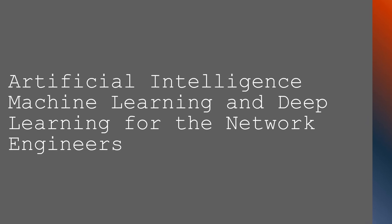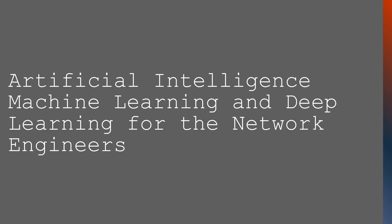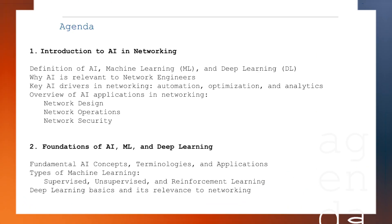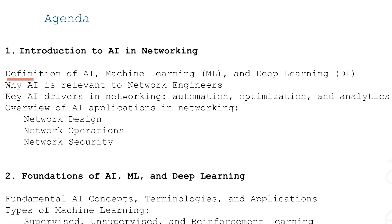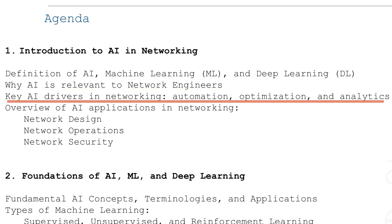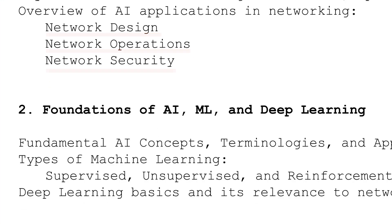This course covers artificial intelligence, machine learning, and deep learning for network engineers. It is designed to not only introduce these concepts but also show how they apply directly to networking. First, we will dive into the introduction to AI in networking — what AI, machine learning, and deep learning really mean and why they matter to network engineers. We will cover key drivers like automation, optimization, and analytics, and explore how these technologies can enhance network design, operations, and security.